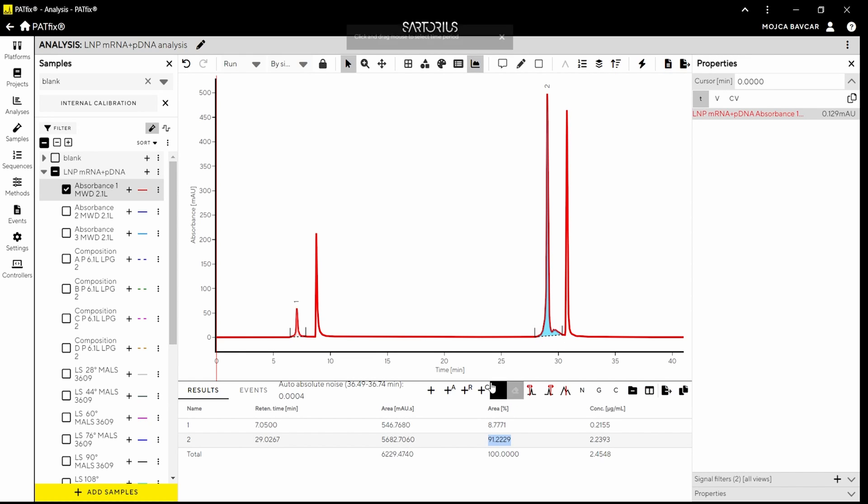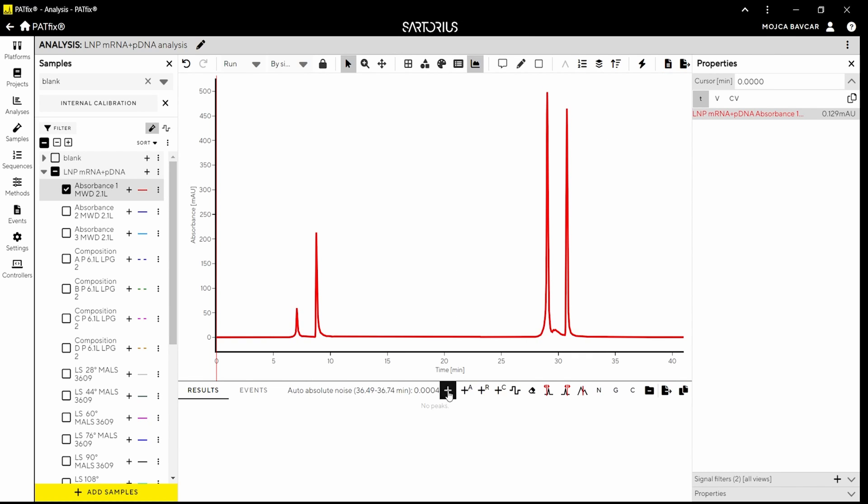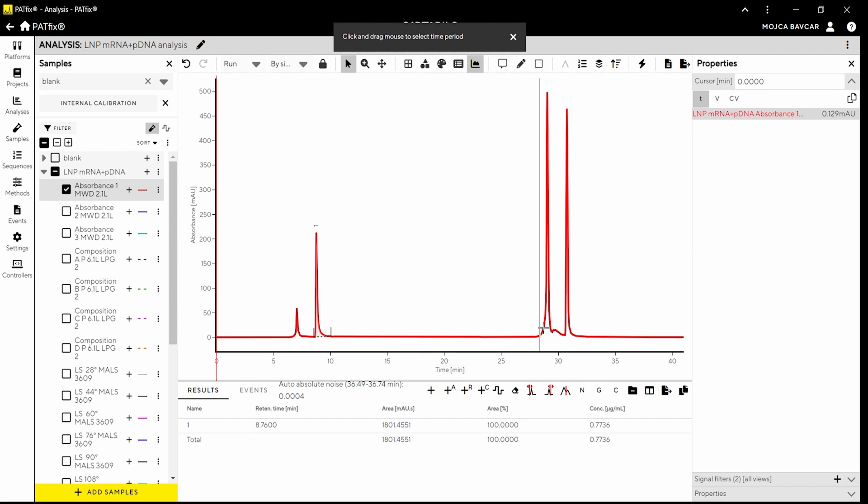From areas of the first eluted peak in both analyses, representing mRNA, its encapsulation efficiency can be determined. Similarly, areas of the second eluted peak can be used to determine pDNA encapsulation efficiency. This analysis provides crucial information for LMP development, as produced LMPs do not contain mRNA and pDNA in their original ratios, which could impact the therapeutic effect of the LMP. Such detailed data cannot be obtained with any other assay known to us.